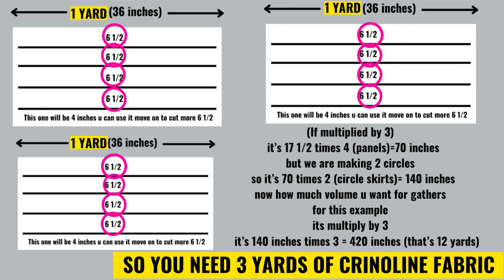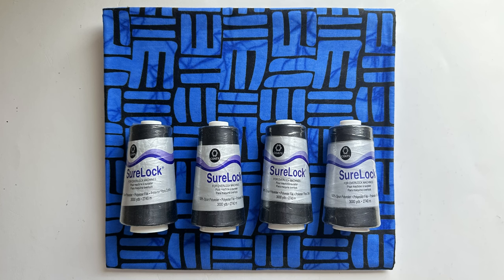The 420 inches is 12 yards. You will see that there are 12 pink circles—every six and a half strip is one yard. There are 12 of them, so that means you need three yards of crinoline fabric.